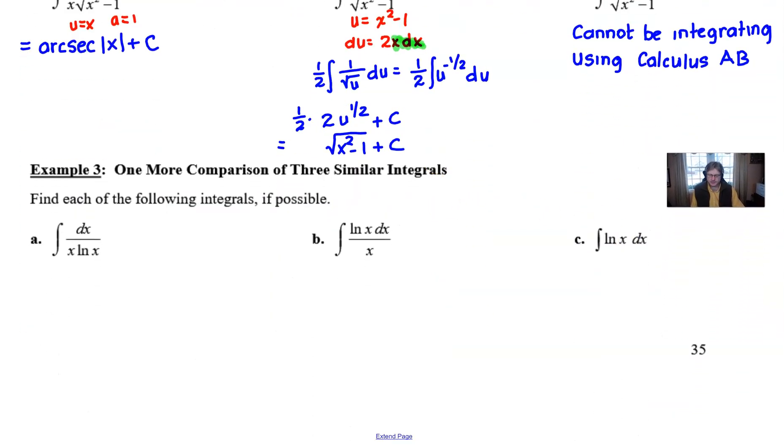And that'll bring us down here to example three, one more comparison of three similar integrals. So what we're going to do here is find each of the following integrals if possible. And if we look at our first one, the integration of dx over x ln of x, this is something that kind of tends to show up a little bit from time to time.